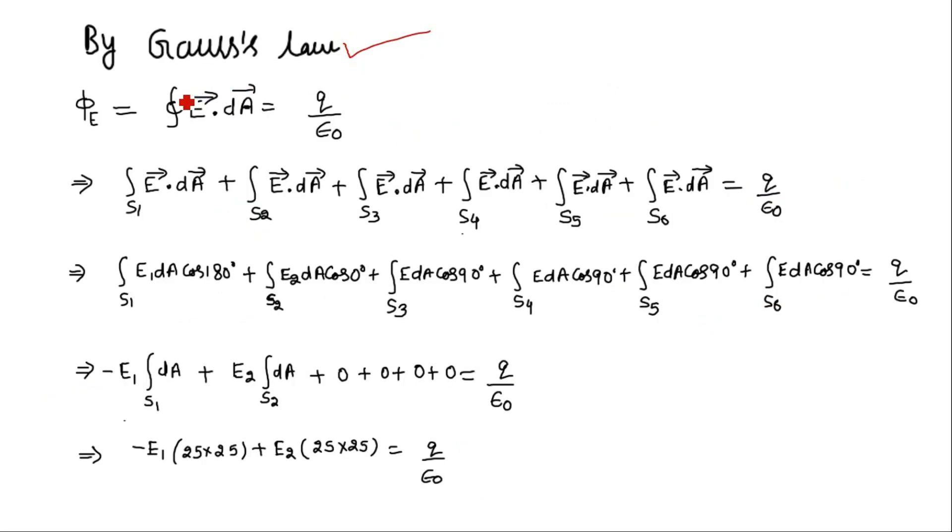Therefore by Gauss law we can write electric flux which equals closed surface integration of electric field, and it is equal to the charge enclosed divided by epsilon 0. We can now break this closed integration into sum of integration of electric field over six open faces of the cube: S1, S2, S3, S4, S5 and S6.